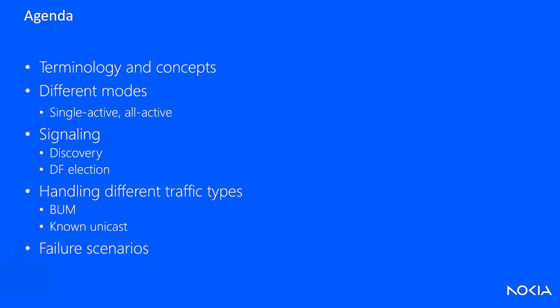So a bit of an agenda. First, we're going to talk about terminology and concepts. We're going to talk about the different modes of operation for EVPN multi-homing, whether it be single active or all active. We're going to talk about signaling, discovery, DF election, and handling of the different traffic types — broadcast, known unicast — and then we're going to talk about failure scenarios on top of that.